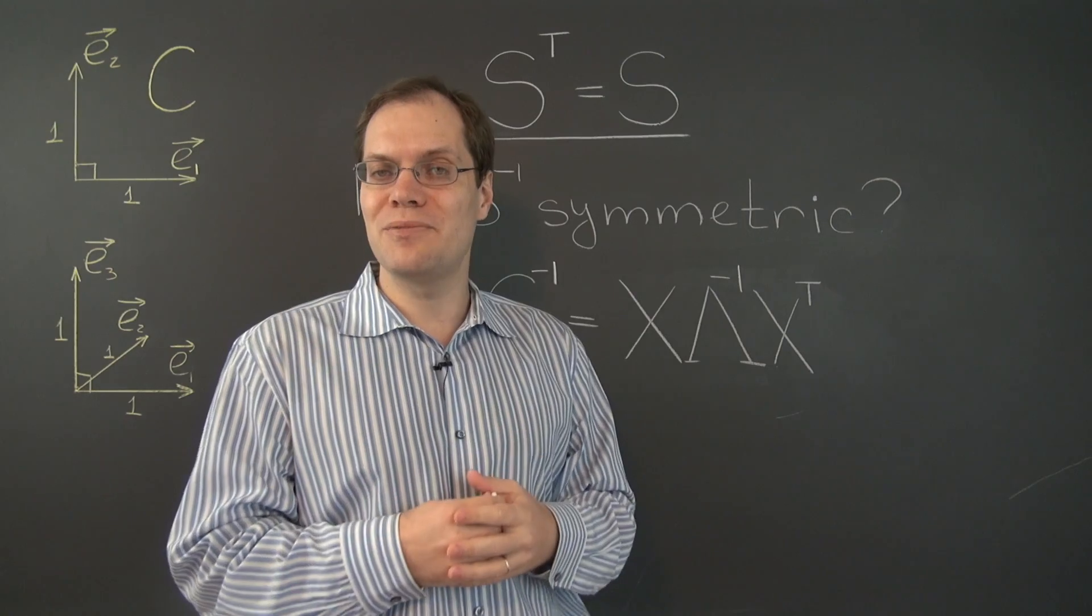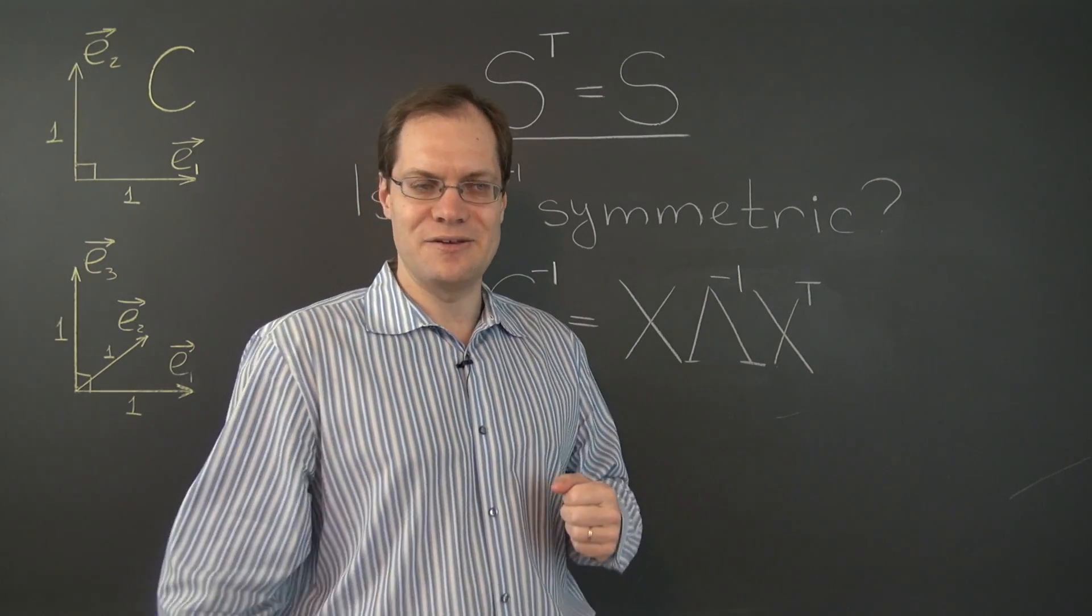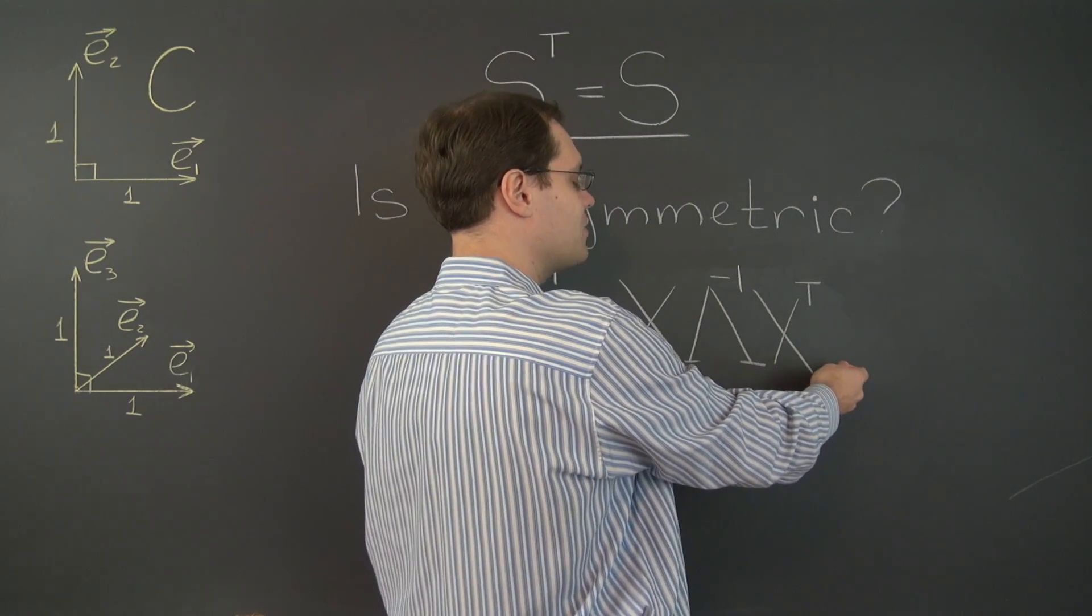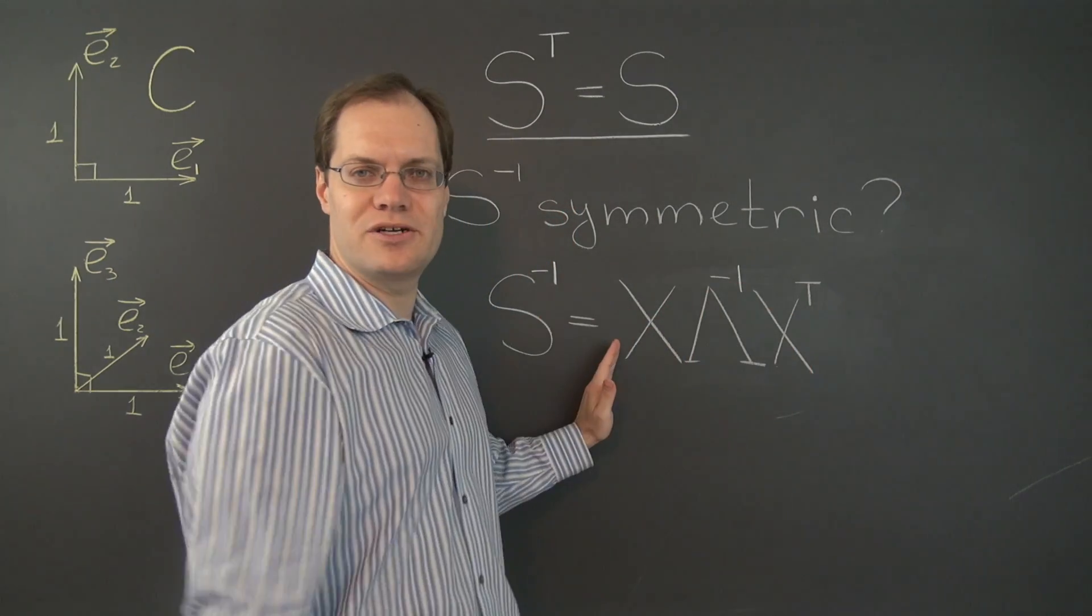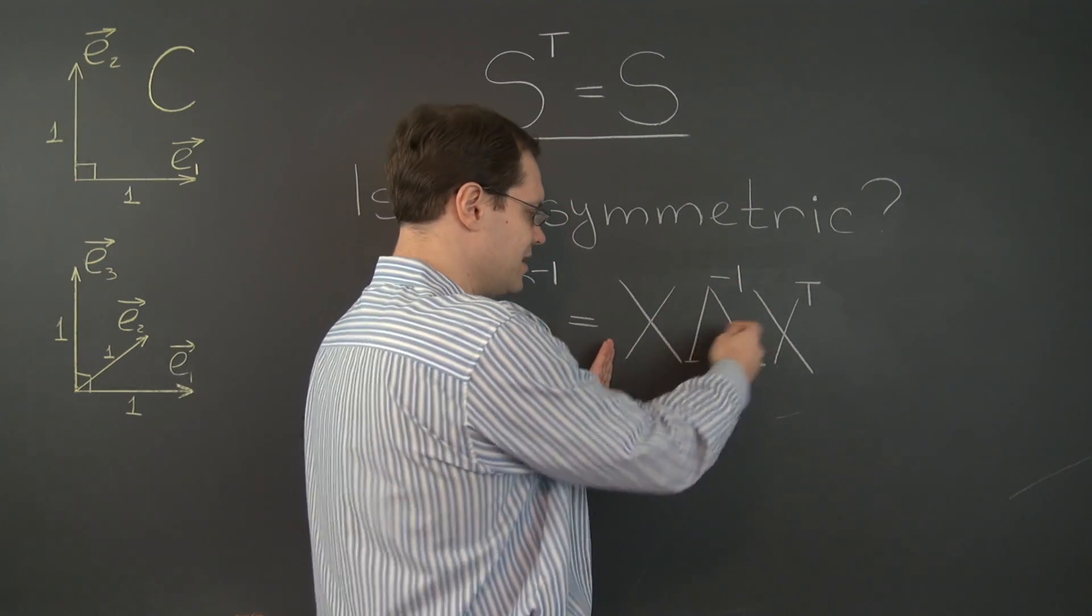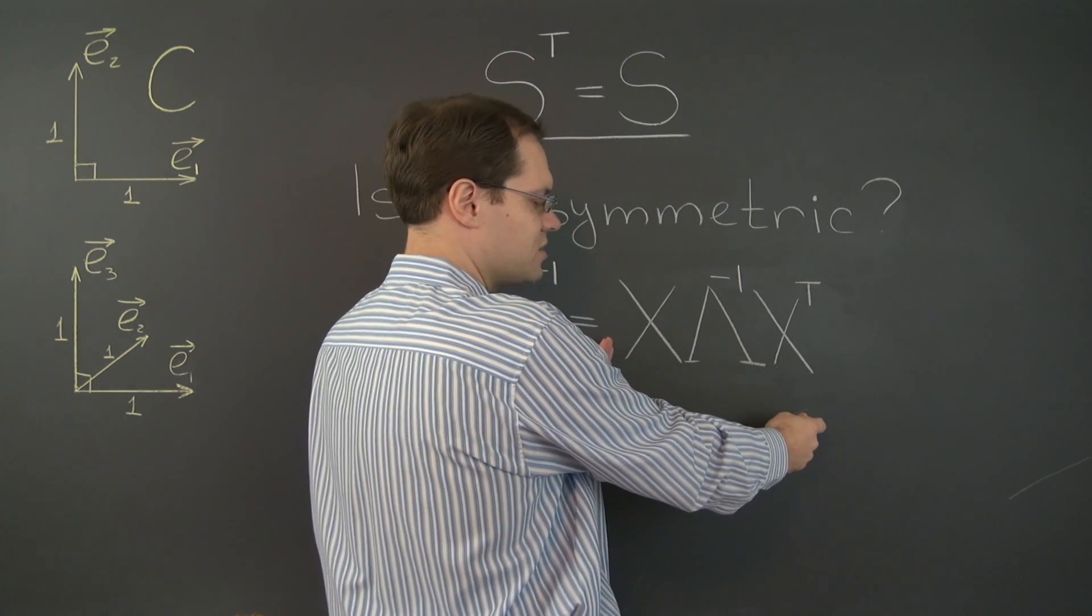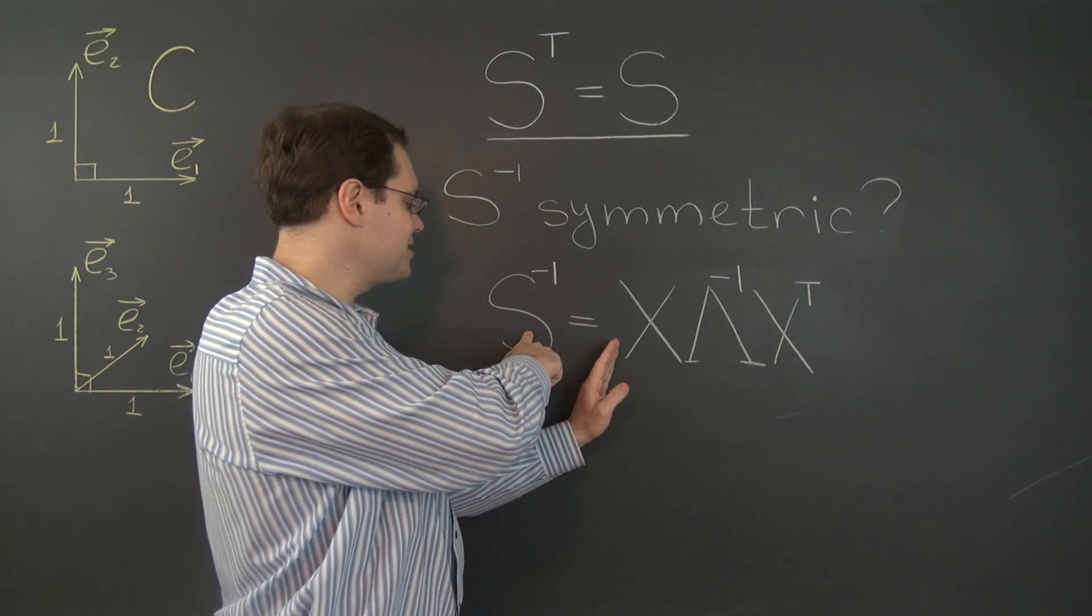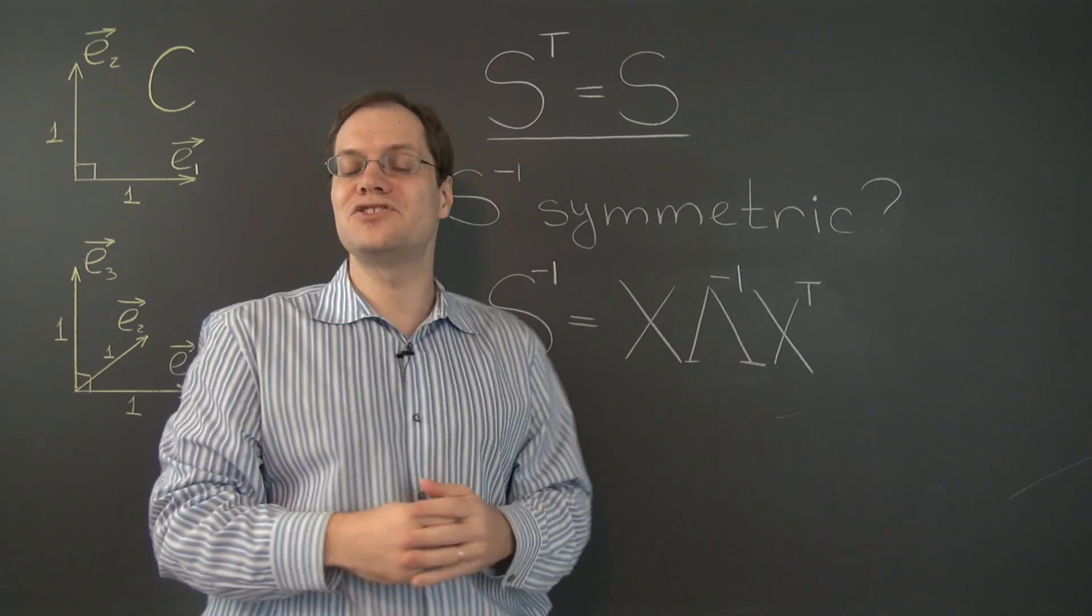I'm sure I don't need to remind you of the argument, but let me do it anyway for completeness sake. If I were to take the transpose of this matrix, I would have the product of the individual transposes in the opposite order. And so I would see X, lambda inverse, X transpose. So the transpose of this matrix is this matrix itself and so it's symmetric.